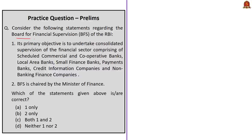The next question is about the Board for Financial Supervision of the Reserve Bank of India — a two-statement question. The first statement is correct: the primary objective of the Board for Financial Supervision is to undertake consolidated supervision of the financial sector comprising scheduled commercial banks, cooperative banks, local area banks, small finance banks, payment banks, credit information companies, and non-banking financial companies. The second statement — that the Board for Financial Supervision is chaired by the Minister of Finance — is incorrect, because it is chaired by the Governor of the Reserve Bank of India. So the correct answer is option A, statement 1 only.